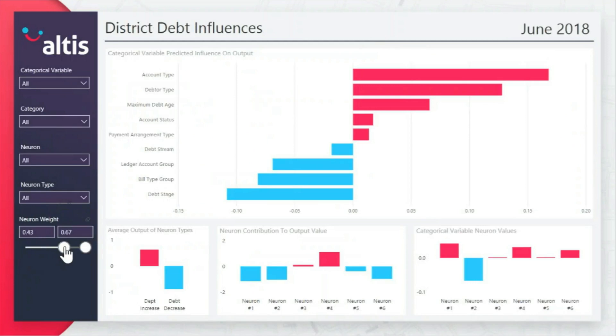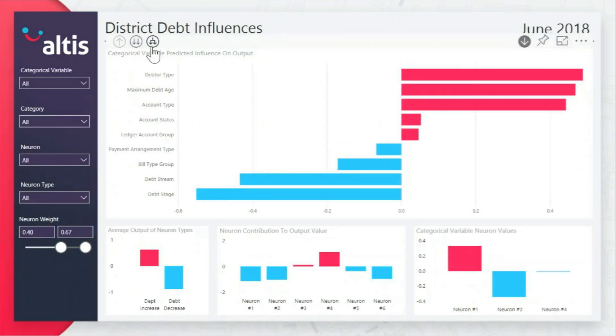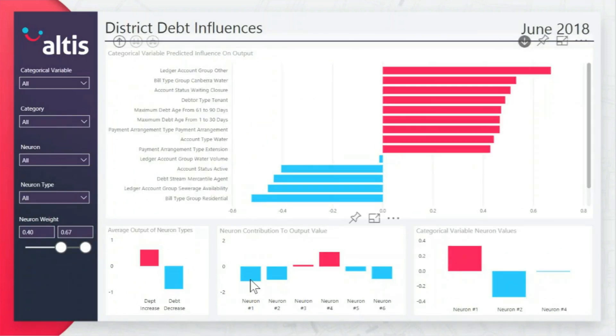We can also use individual neurons to find combinations of factors affecting the debt.